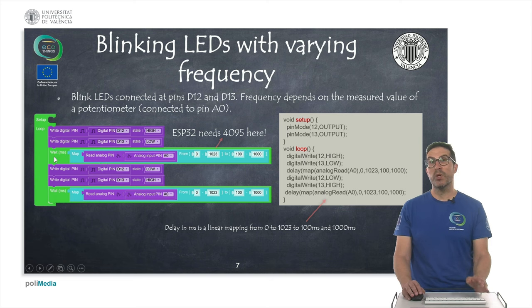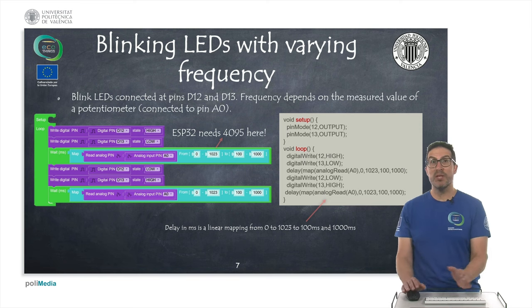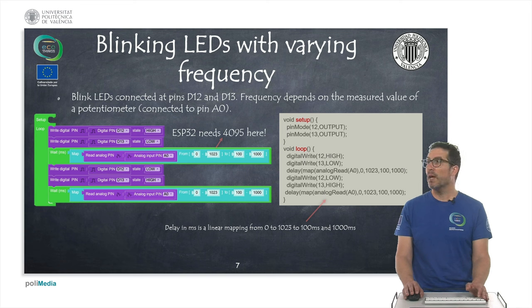In this case, we could use a fixed frequency, but the idea is to use the potentiometer that we have connected to pin A0. This potentiometer will return a value, remember, between 0 and 1023. This value will be mapped, map means here linear transformation. So when we read a 0, this becomes 100, and when we read this number, this becomes this number here. And these numbers are the waiting time that we want to use in milliseconds.